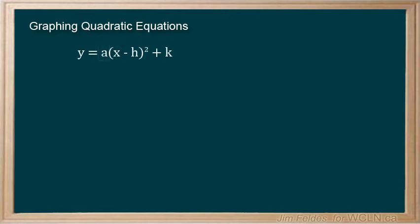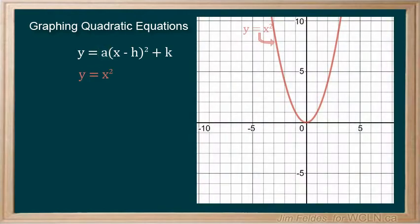Here is a quick reminder of how the constant a defines the shape and orientation of the parabola. Again, we will relate the changes to our model parabola. For example, y equals 4x squared.